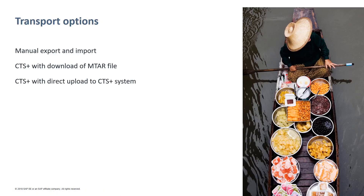In the third option, integration with CTS Plus is much tighter compared to the previous option. With a single click, you can transport integration content from the source tenant to the target tenant through your CTS Plus system. When you trigger the transport from the source, a transport request is automatically created and the archive file is directly attached to the transport request. So compared to the second option, no additional medium is required where you need to store the archive. This however requires additional configuration steps, which we will cover in a minute.